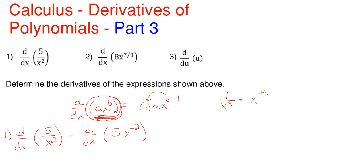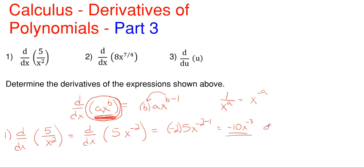Now we are in the formula of ax to the power of b, where five is a, x is still the variable, and minus two is the power b. So taking the derivative of this, we're going to keep that constant of five, then take this minus two and drop it in front and multiply everything by it, then subtract one from that power. Simplifying: minus two times five gives me negative ten, and minus two minus one gives me the power of negative three. So the answer is negative 10 times x to the negative three, or equivalently minus 10 over x to the power of three — just rewriting the negative exponent in the denominator.